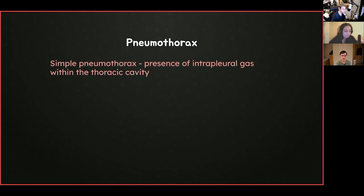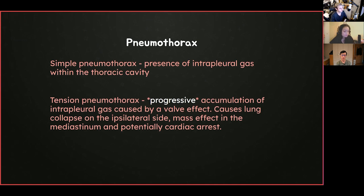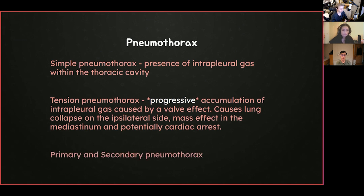Briefly: a simple pneumothorax is gas or air within the pleural space, which normally contains pleural fluid to maintain pressures for lung inflation and deflation. A tension pneumothorax is a progressive accumulation of air, normally caused by trauma — stab wounds, gunshot wounds, road traffic accidents causing rib fractures communicating with the pleural space — so that more and more air accumulates as the patient keeps breathing. Pneumothoraces can be further subdivided into primary (in the absence of existing lung conditions) and secondary (with lung disease).